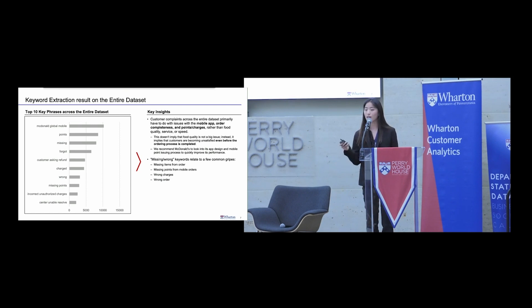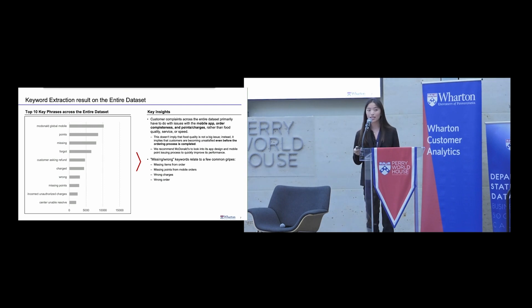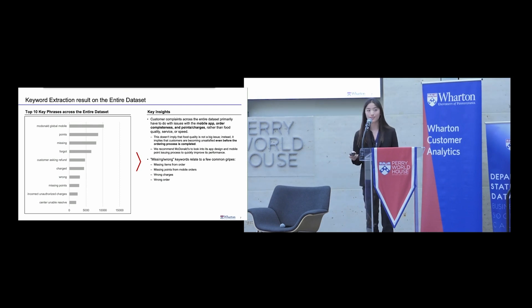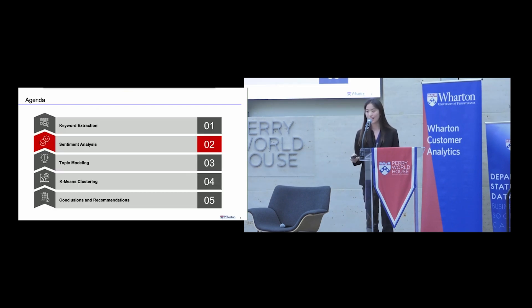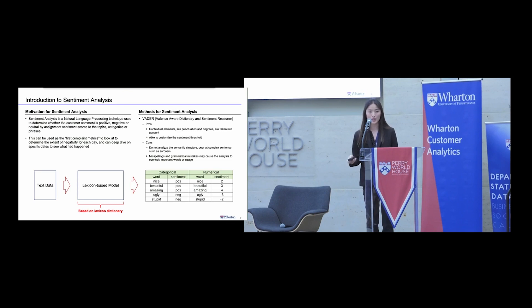It's important to note that this doesn't imply food service or quality isn't a big issue — rather, it's saying that customers are becoming unsatisfied even before the ordering process is completed. Our recommendation is for McDonald's to look into its app design and mobile points process to quickly improve performance and address the bulk of these complaints. For clarification: 'missing' refers to both missing items and points; 'wrong' refers to both wrong charges and wrong orders.